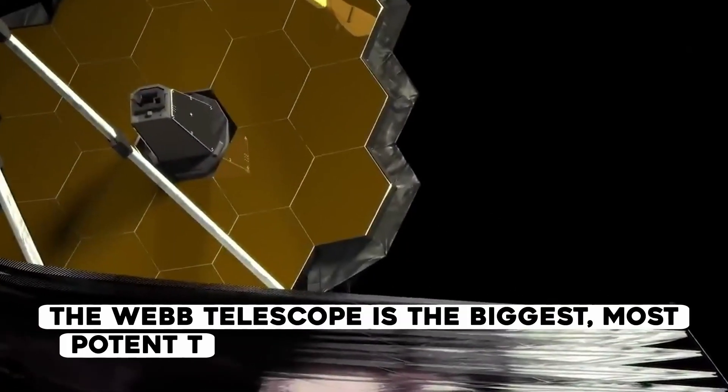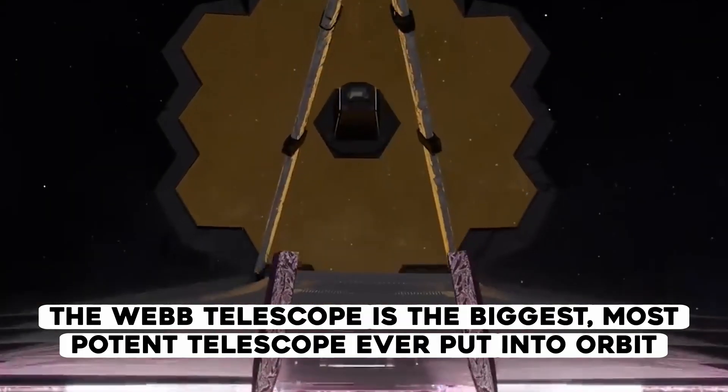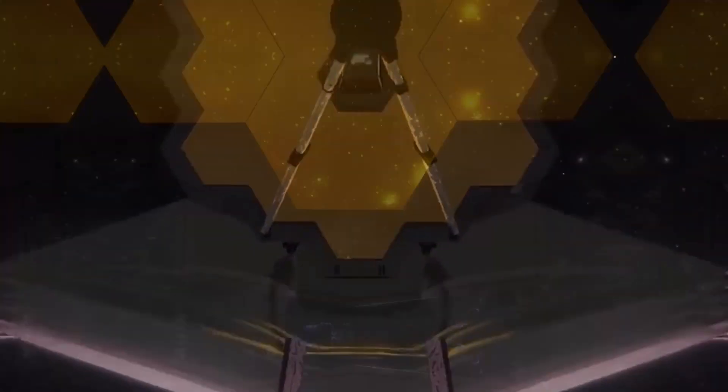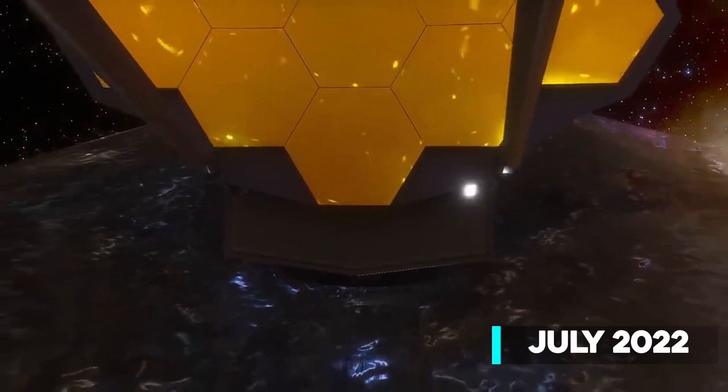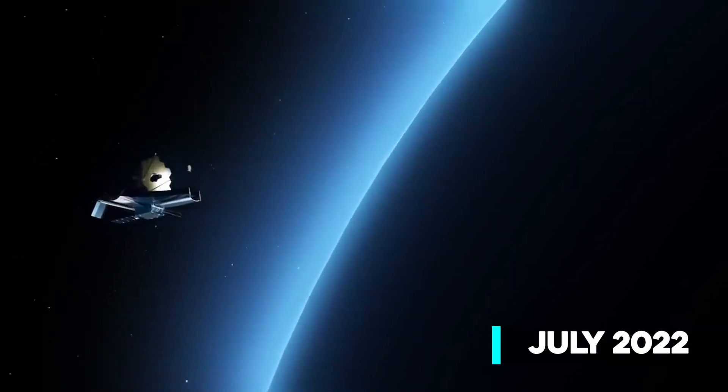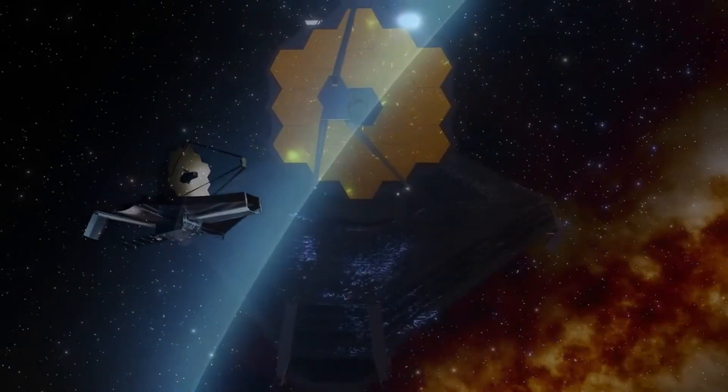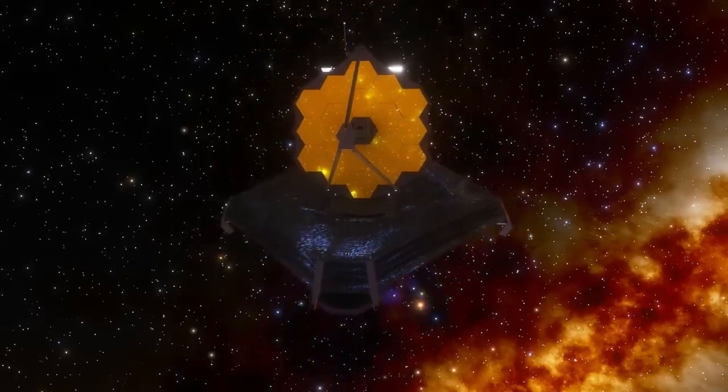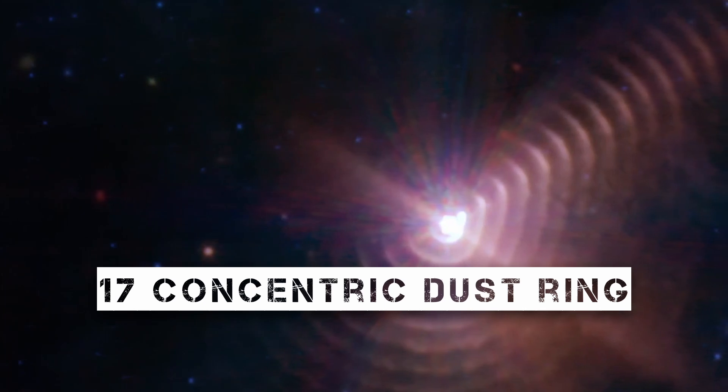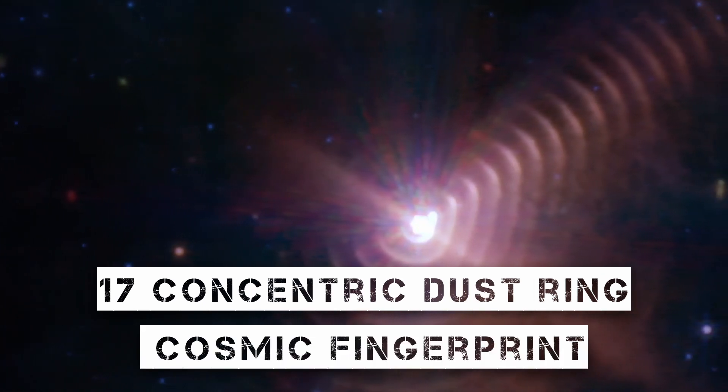The Webb Telescope is the biggest, most potent telescope ever put into orbit. The first Webb photos, which revealed startling new information about the universe, were made public in July 2022. The newest observations have produced a fascinating image of 17 concentric dust rings that resemble a cosmic fingerprint.